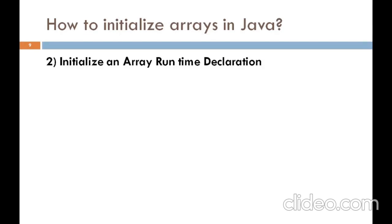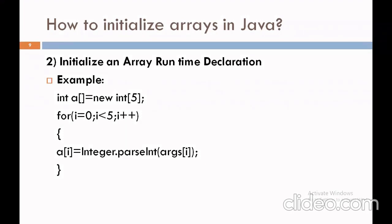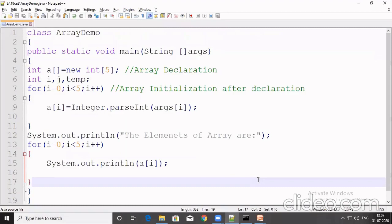The other way is initializing an array at runtime — that means after declaration of the array. For that we have two ways: either we can enter the elements from command line arguments, or we can enter them using the Scanner class. I will show you a simple example where I enter array elements using command line arguments — that means I use the args string array for passing the elements of the array.